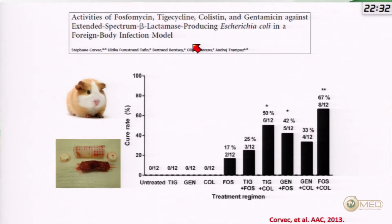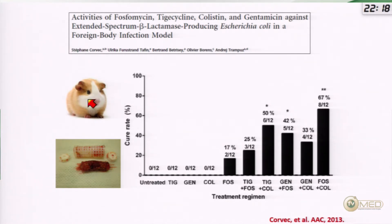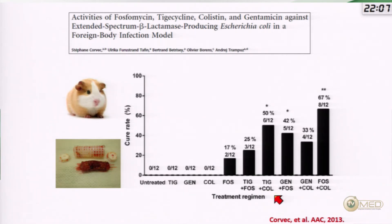In the guinea pig foreign-body model using E. coli, the animal receives antibiotics and we count recovered bacteria. Monotherapies — tigecycline, gentamicin, colistin, and fosfomycin — do not cure the guinea pigs. But combinations of colistin plus tigecycline, colistin plus gentamicin, or colistin plus fosfomycin had significantly better results than monotherapies. So combination therapy appears beneficial.